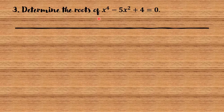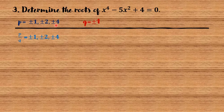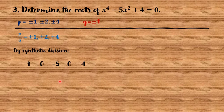Number 3: Determine the roots of x raised to the 4th minus 5x squared plus 4 equals 0. In this polynomial, p equals 4 and q equals 1. The factors of p are positive and negative 1, positive and negative 2, and positive and negative 4. The factors of q are positive and negative 1. The possible rational roots are positive and negative 1, positive and negative 2, and positive and negative 4. Notice there are missing terms x cubed and x, so we put 0 as their coefficients.